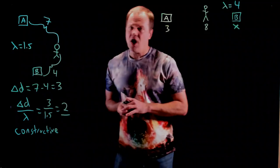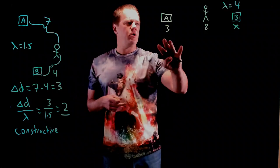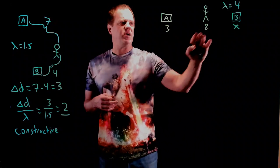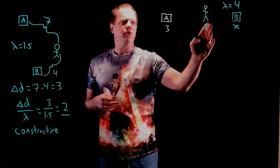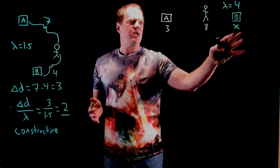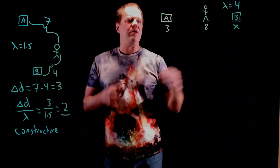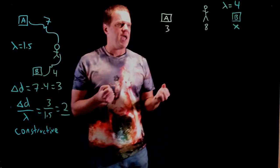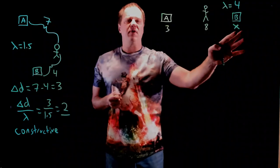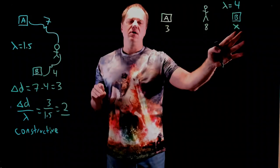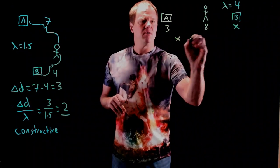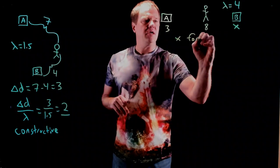Let's do a little bit more complicated one. With this one, we have speaker A at a location of 3, the observer at a location of 8, and then speaker B at an unknown location x. We know that the wavelength that these speakers are emitting is 4 meters. Our job is to determine the values of x for which we get destructive interference. So, x for destructive.